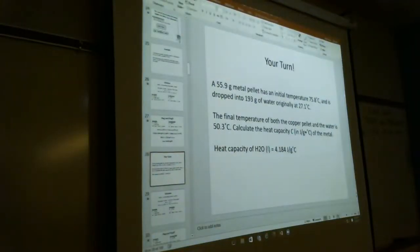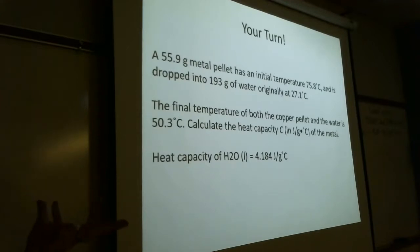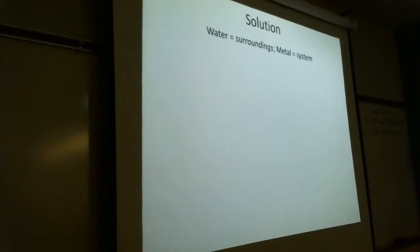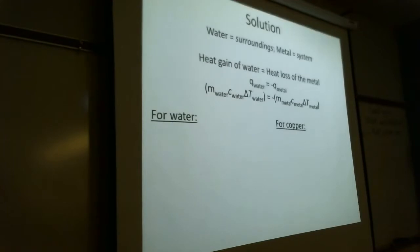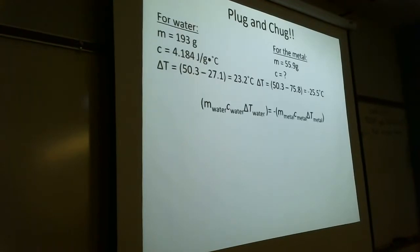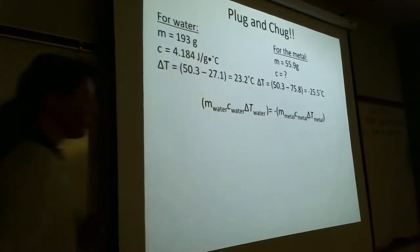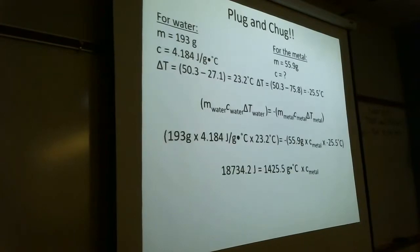Alright, let's go over this one. Again, organization is the key — keeping your data organized helps prevent math errors, because there are just a lot of numbers you're juggling. The water will be our surroundings, the metal will be our system. The water is going to gain, the metal is going to lose. We keep all our data organized, plug into MC delta T for the water equals negative MC delta T for the metal. I came out with 13.1 joules per gram·degree Celsius. Three significant figures.